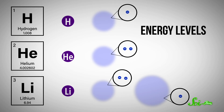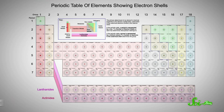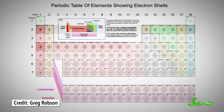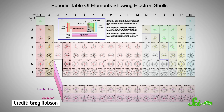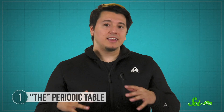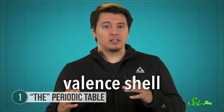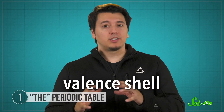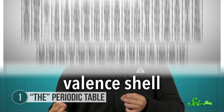Energy levels are like shells that electrons fill in around the atom's nucleus. Every element in a period has a similar number of these energy levels, but those levels will be filled with a different number of electrons. Every element in a group has the same number of electrons in its highest level, but might have a very different number of levels. That highest level is called the valence shell, and those outermost electrons are the ones that form chemical bonds.